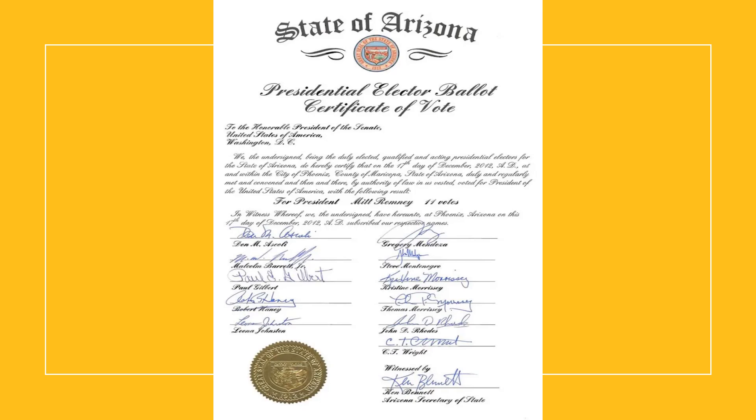Here we have a sample electoral vote ballot — the certificate of the vote from the state of Arizona — showing the 2012 presidential election. Here are all the electoral votes for president for Mitt Romney. Mitt Romney did not get as many electoral votes as his competitor Barack Obama, the incumbent president at the time. So Barack Obama and Vice President Joe Biden were reelected together as a team, and Mitt Romney and Congressman Paul Ryan, his running mate, did not get elected. This is an interesting demonstration of what a certificate of the vote for the presidential electoral ballot actually looks like — it includes a seal of the state of Arizona and a signature of the secretary of state.